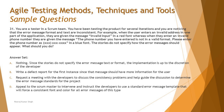Option B says: write a defect report for the first instance since that message should have more information for the user. This looks okay at first, but given that there is no requirement written specifying the error message format, I cannot call it a defect upfront. We only call something a defect where expected does not equal actual, but here the expectation itself does not exist. So this is also an irrelevant option.